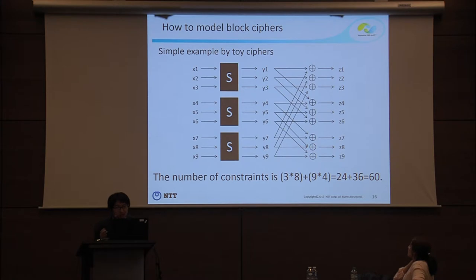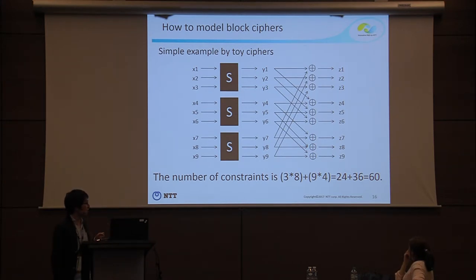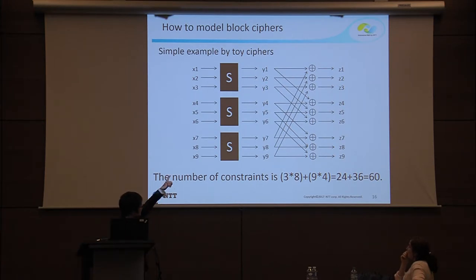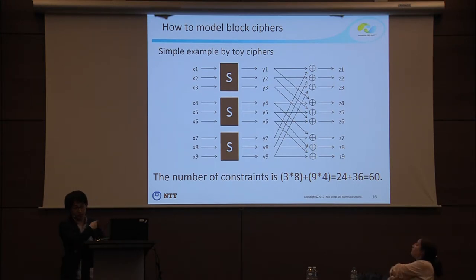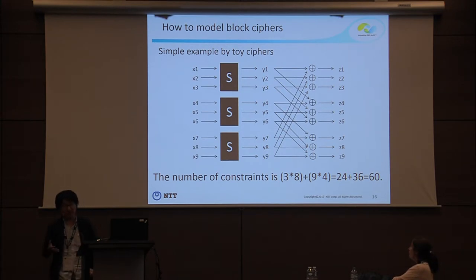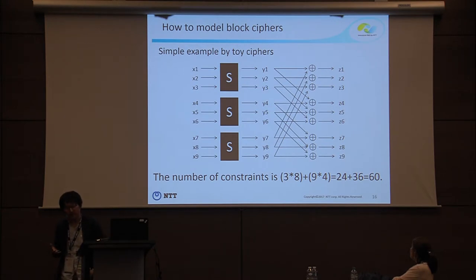Finally, we want to represent the entire round function. We have 3 S-boxes and 9 XOR operations. The number of constraints is 3×8 + 9×4 = 60 constraints, which is enough to represent the round function. If we want to evaluate an r-round cipher, 60r constraints are enough to represent the entire block cipher.